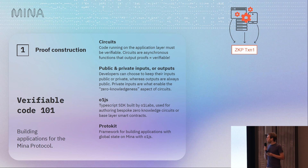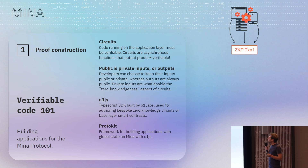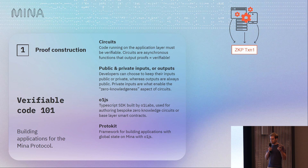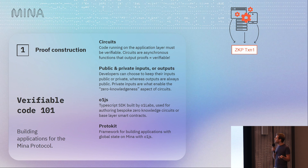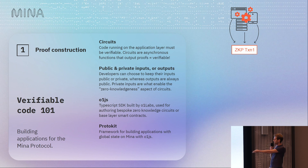I'll walk through what it looks like to actually execute a transaction on Mina, starting at the top level about proof construction. When you run a transaction on Mina, what you're really doing is creating a proof about some state transition of your application — and that has to be written in zero-knowledge proof land. It can't just be Solidity or something; it has to be something specialized for zero-knowledge proofs. For Mina, we use circuits for that. You use O1JS to make these circuits and to create proofs about them that run very quickly.